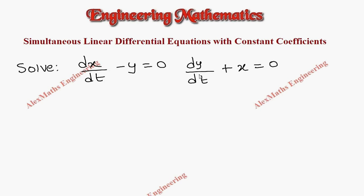The two equations are given. The first equation can be written as dx/dt minus y equal to 0. And the second equation is dy/dt plus x equal to 0.